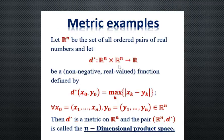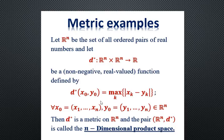Another metric on ℝⁿ is called the product metric. Given two points x₀ and y₀, we define the distance as the maximum of the absolute differences of their components: d(x₀, y₀) = max{|x₁−y₁|, |x₂−y₂|, ..., |xₙ−yₙ|}. This kind of metric is not very familiar visually, but it is very useful in abstract calculations. When we combine this metric with ℝⁿ, we get what is called the n-dimensional product space.